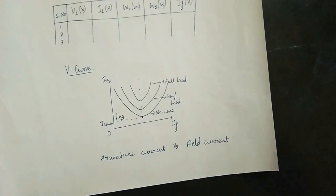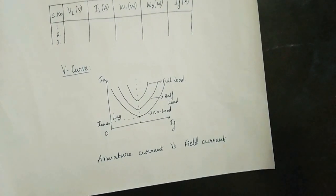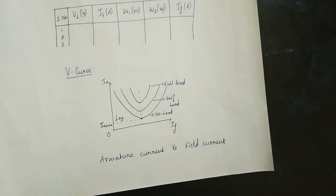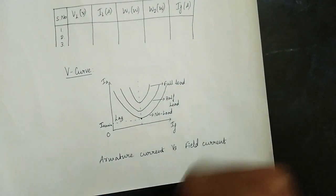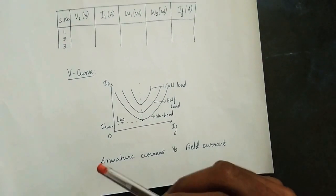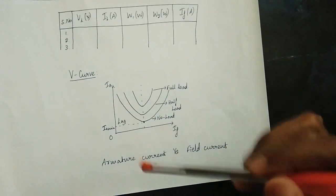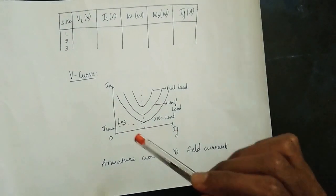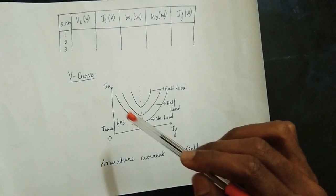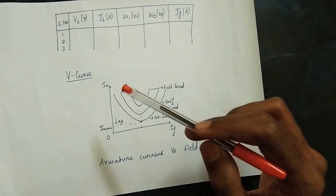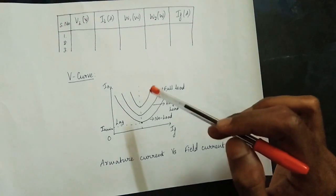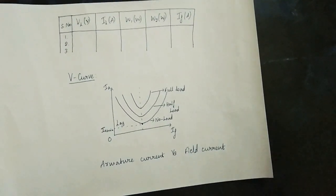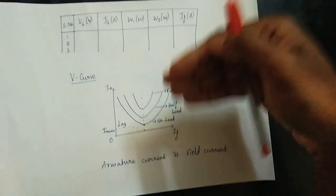In this test, the current and variables vary. The V curve has the field current on the X-axis and the armature current on the Y-axis. This is the plot. As we increase the field current from under-excitation toward normal and over-excitation, the armature current first decreases and then increases — forming a V shape. This is the V curve: armature current versus field current.